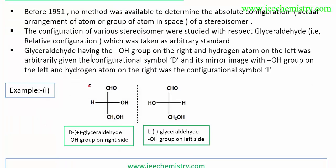Before 1951, there was no method adopted to provide the absolute configuration of any compounds. Absolute configuration means the actual arrangement of atoms or groups of atoms in space. But there was no method before 1951 to provide an absolute configuration, so a relative configuration was provided according to the concept of glyceraldehyde.